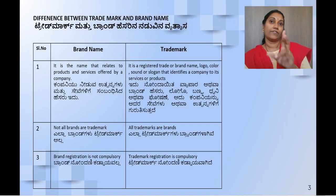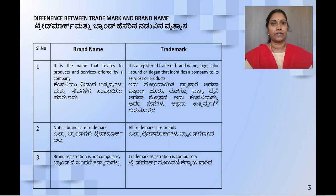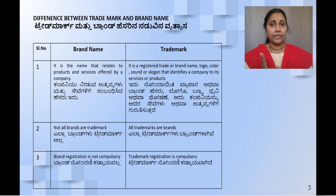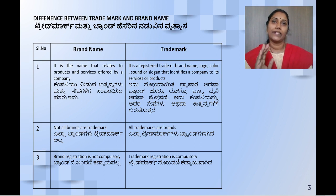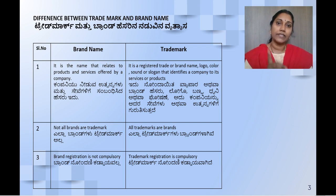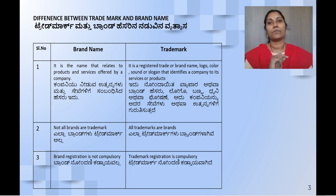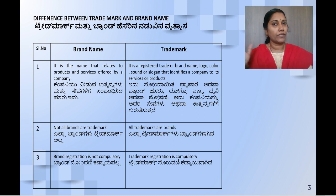Now let us see the difference between brand name and trademark. First difference: brand name relates to the product and service offered by a company. A brand name identifies one product or service. A trademark is a registered trade name, logo, color, sound, or slogan that identifies a company and its service or product.